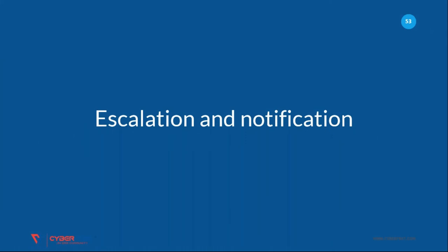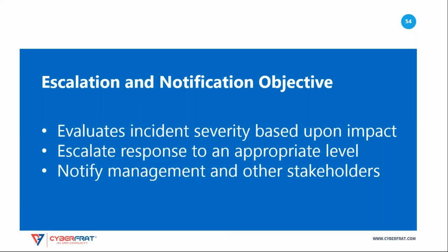Escalation and notifications: when a security professional detects a potential incident, they should immediately act to isolate affected systems and contain the damage. As soon as they have handled the immediate emergency, they should move into the incident escalation and notification process. This process has several important objectives: first, it evaluates the severity of the incident based on its potential impact on the organization's security; second, it escalates the incident to an appropriate level of incident response; and finally, it notifies management and other stakeholders of the incident and the plan to resolve it.